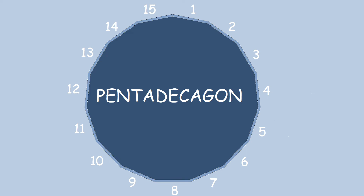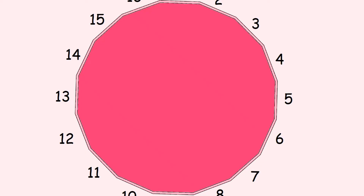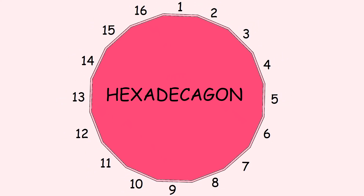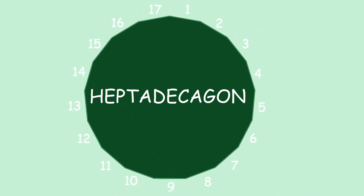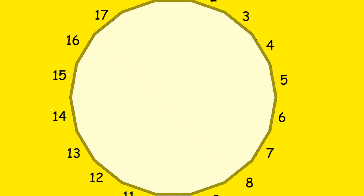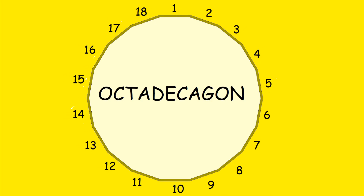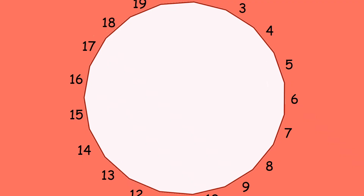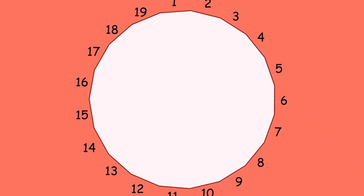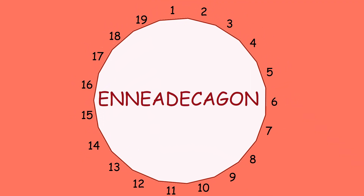What's a 15-sided shape? Pentadecagon! What's a 16-sided shape? Hexadecagon! What's a 17-sided shape? Heptadecagon! What's an 18-sided shape? Octadecagon! What's a 19-sided shape? A Enneadecagon!